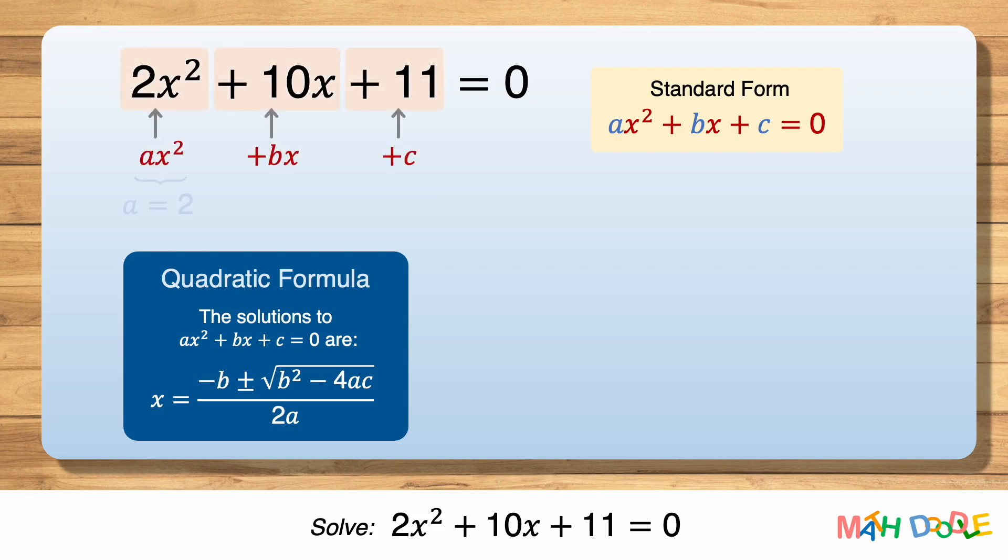As you can see, A is 2, B is 10, and C is 11. Now, let's substitute these for A, B, and C in the quadratic formula.